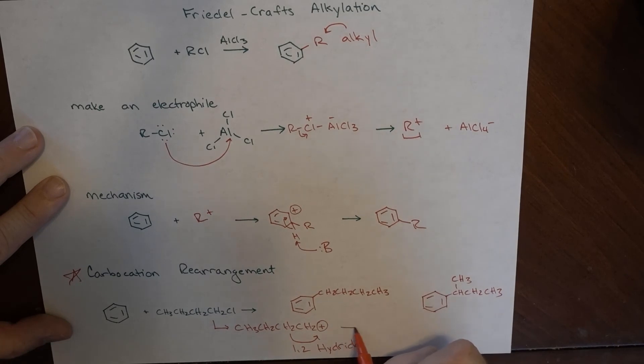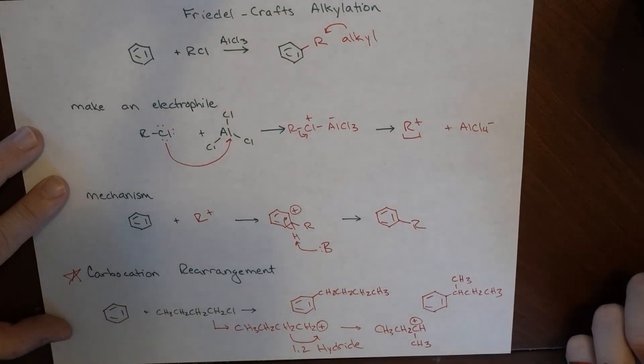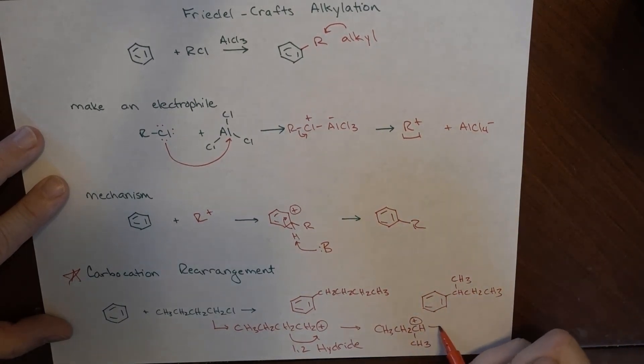And what that'll end up doing is making this species CH3-CH2-CH-CH3. And now we've got a secondary carbocation, which is much more stable. And then that can end up reacting with benzene to make this species.